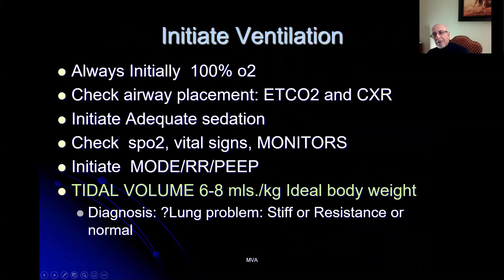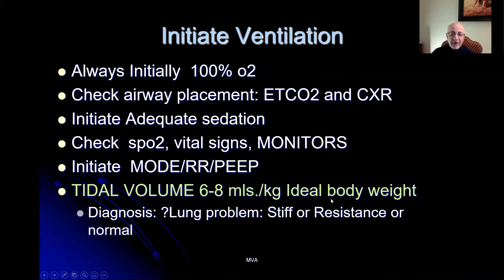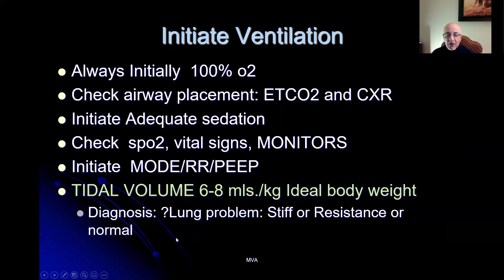Initially when starting the patient on mechanical ventilation, I recommend starting at 100% oxygen. After the airway is placed, check end-tidal CO2 as soon as possible, and obtain a chest x-ray after intubation and placing an NG tube. Initiate adequate sedation, and monitor O2 saturation, vital signs, end-tidal CO2, and cardiac monitor. Then decide on the mode, respiration rate, and the amount of PEEP. Tidal volume is generally 6 to 8 milliliters per kilogram ideal body weight and should generally not be exceeded. We may lower tidal volume once we get data, depending on whether we're dealing with a stiff, resistant, or normal lung.